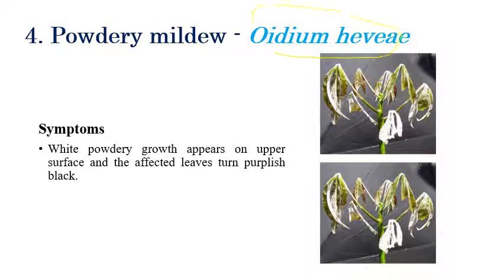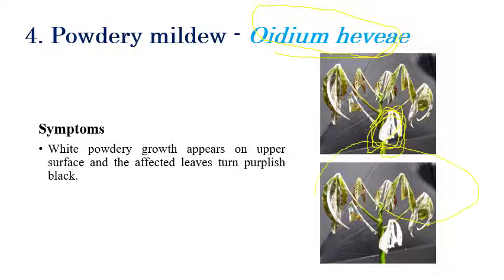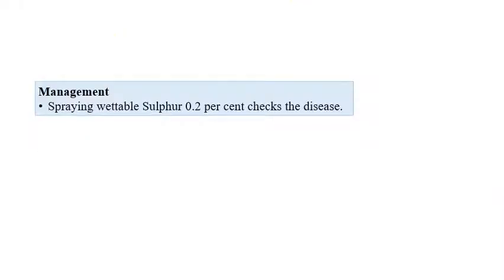The next disease is Powdery Mildew, caused by Oidium heveae. The name itself indicates a powdery growth appears on the surface of the leaf. The powdery growth is white and later turns purple-black in color. White powdery growth along with purple-black appearance of leaves is a major symptom. Spraying of wettable sulfur at 0.2 percent can effectively control this disease.